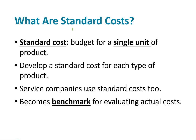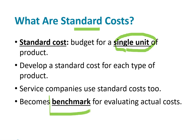So what are standard costs? Standard costs are the budgets for a single unit of a product. In other words, we have budgets for all the costs, but now we want to look at what it costs just to make a single unit. We develop a standard for each type of product, and we can also use standard costs in service companies. This will be used as a benchmark — a standard cost is kind of what you're shooting for, or an estimation of what one unit should cost. So it's a benchmark for evaluating the actual costs.